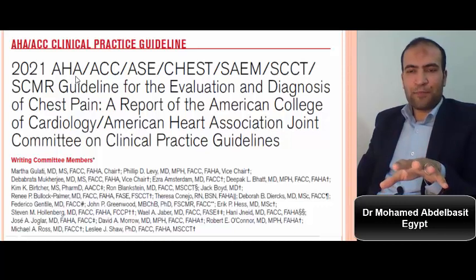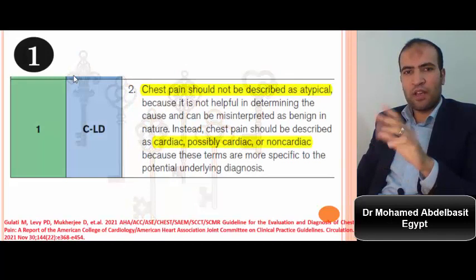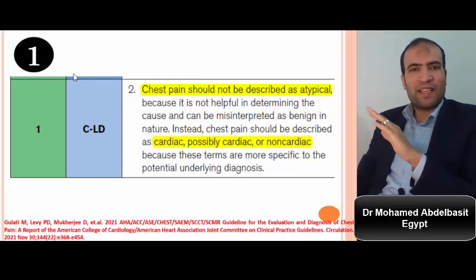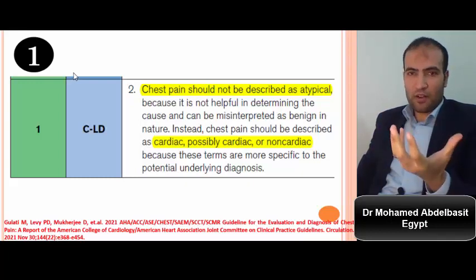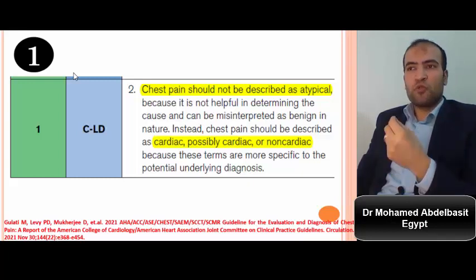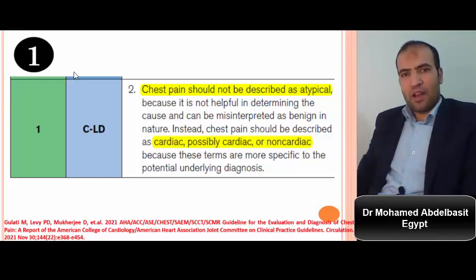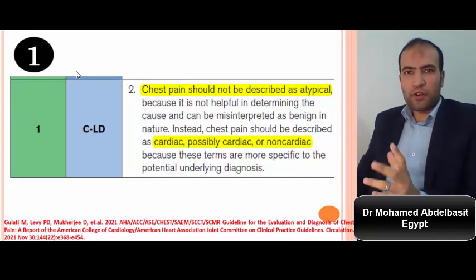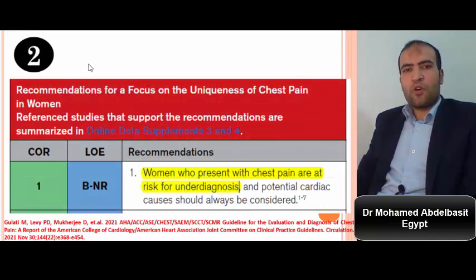These guidelines establish some keys for dealing with patients with chest pain. Key number one: avoid using the term 'atypical chest pain.' Instead, use 'cardiac,' 'possible cardiac,' or 'non-cardiac.' Why? Because many patients labelled as atypical chest pain are actually cardiac patients with ischemic heart disease, and frequently using the word 'atypical' leads to underestimating and underdiagnosing patients with life-threatening ischemic heart disease.